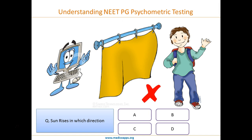Now, what will the computer say? Just imagine — if the student got the first question right but gets this second question wrong, this question can be answered by even a class 1 student. So probably this student doesn't even belong to grade 1.